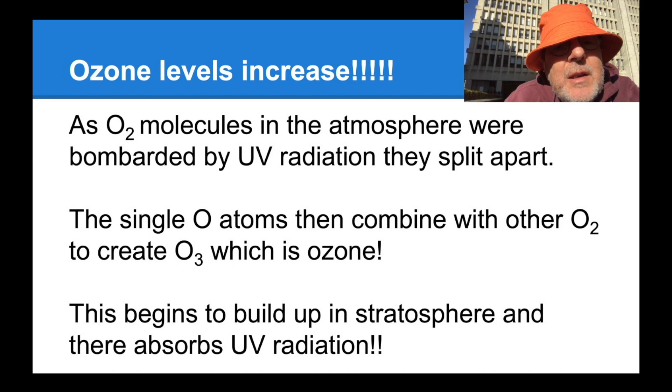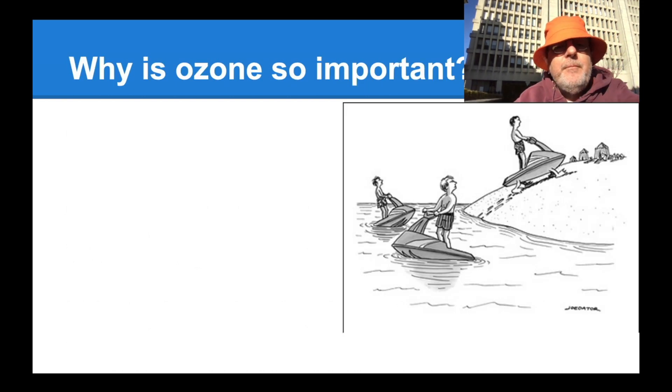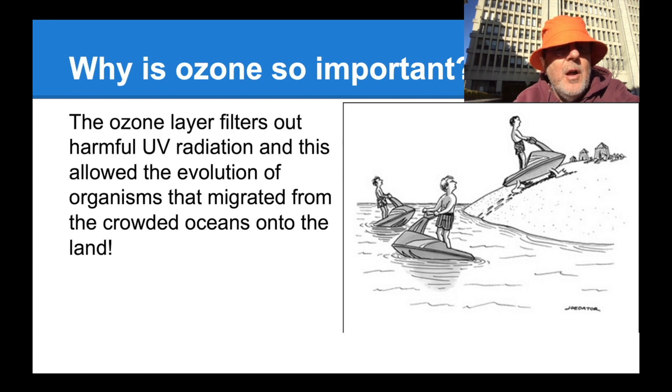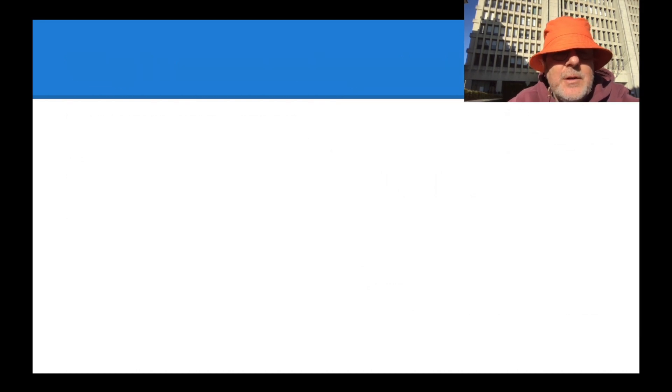And there we are, see the evolution of life on land begin to be possible. And here is why ozone is so important because your jet ski cannot evolve from the water to the land without being protected by this beautiful layer of stratospheric ozone. The ozone layer filters out harmful ultraviolet radiation. And this allowed the evolution of organisms that migrated from the crowded oceans onto the land. And with that, ladies and gentlemen, we will stop. Time for your attention.